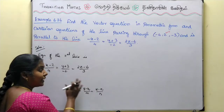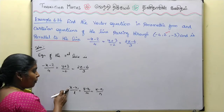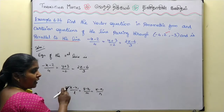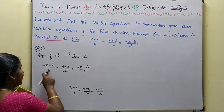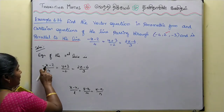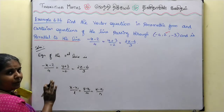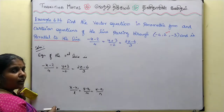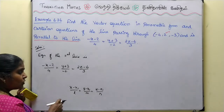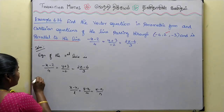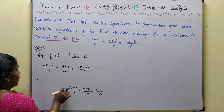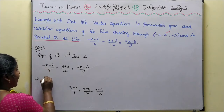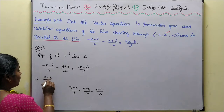We will check the formula: x, y, z must be positive in the numerator with the same coefficient. But here x has a minus sign, so we need to convert to standard format. We will change all the signs. So x plus 2 divided by minus 4.